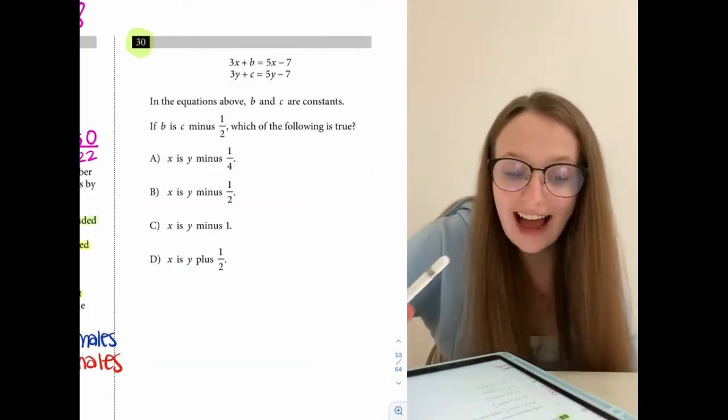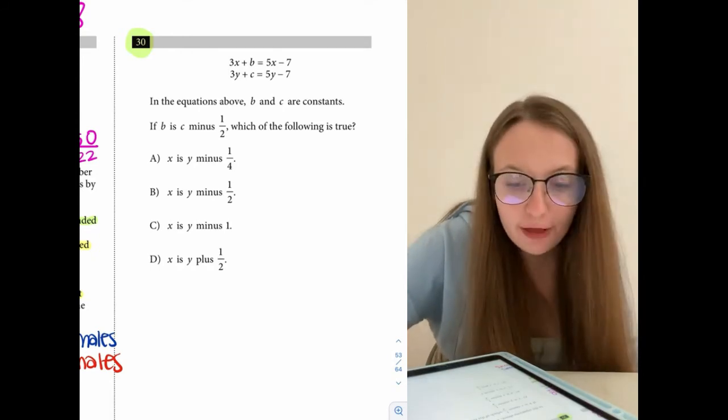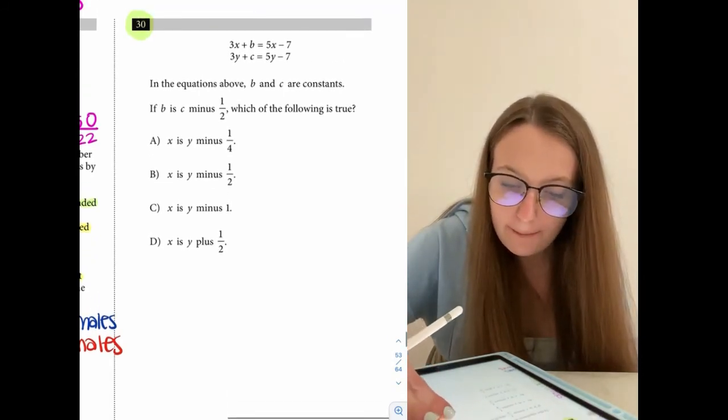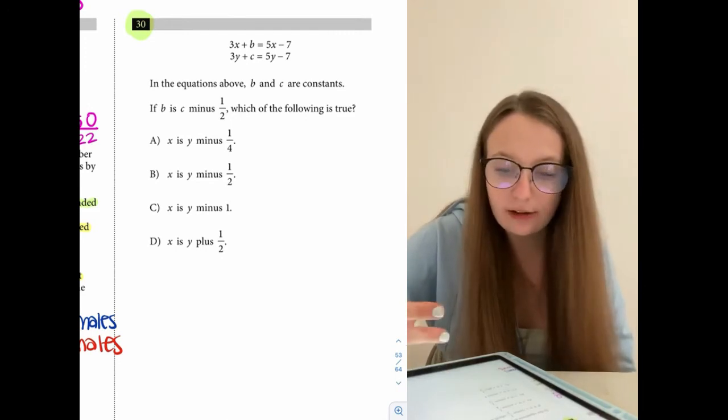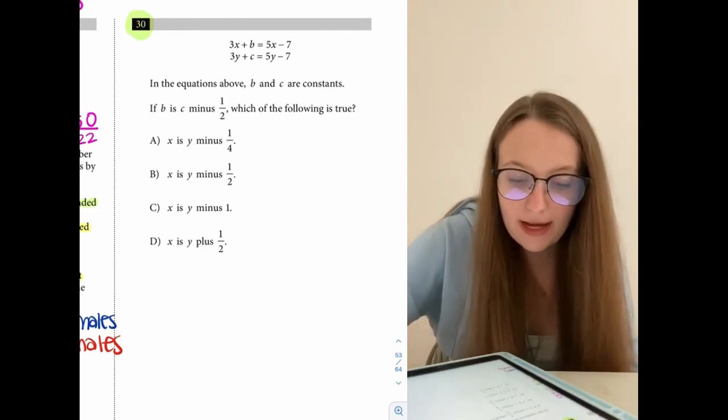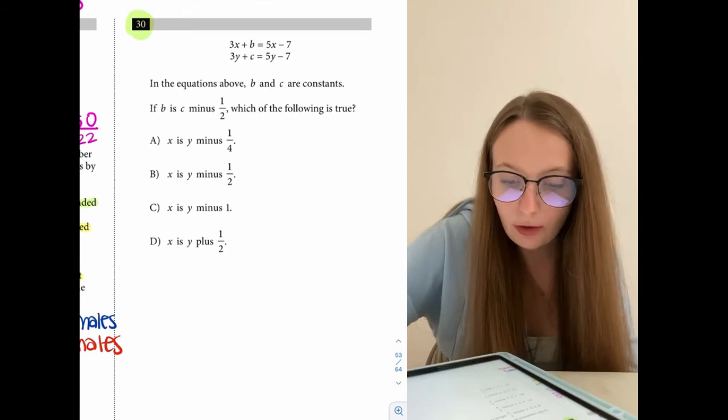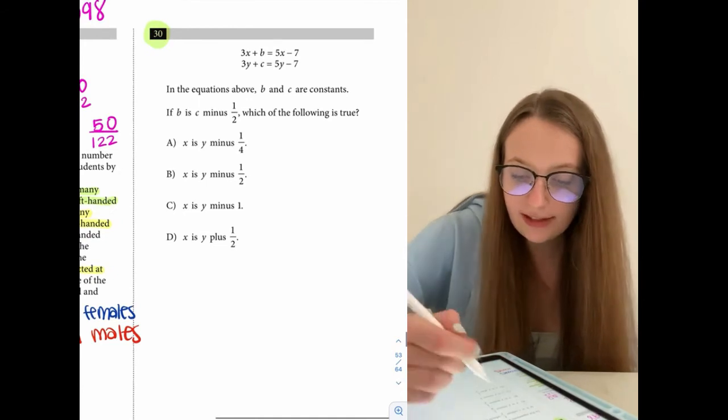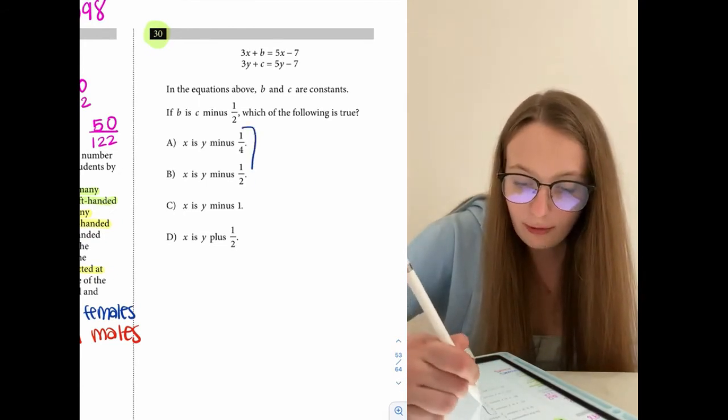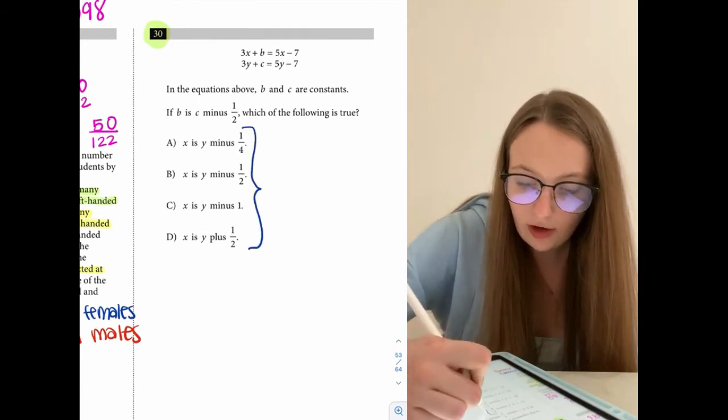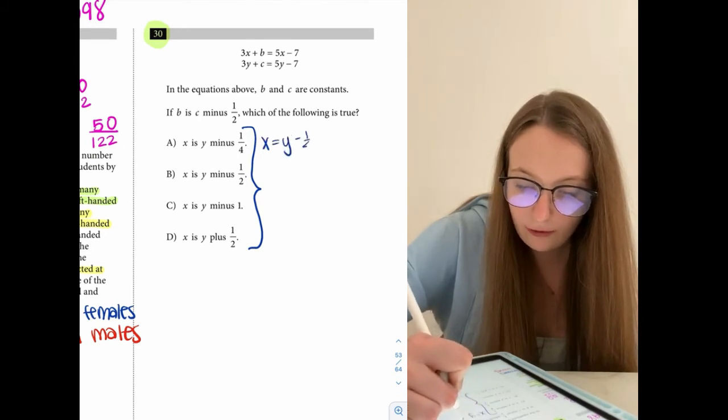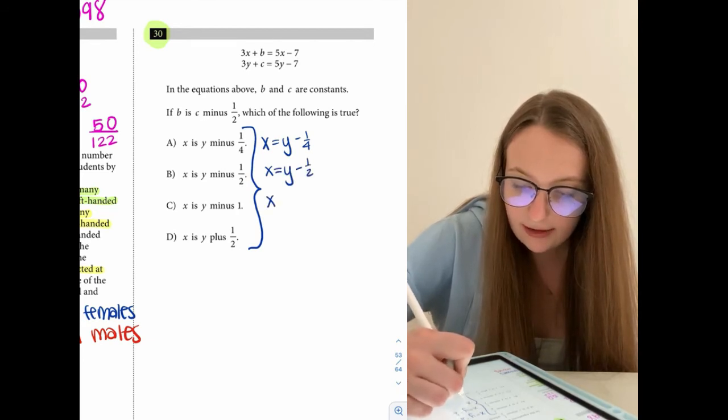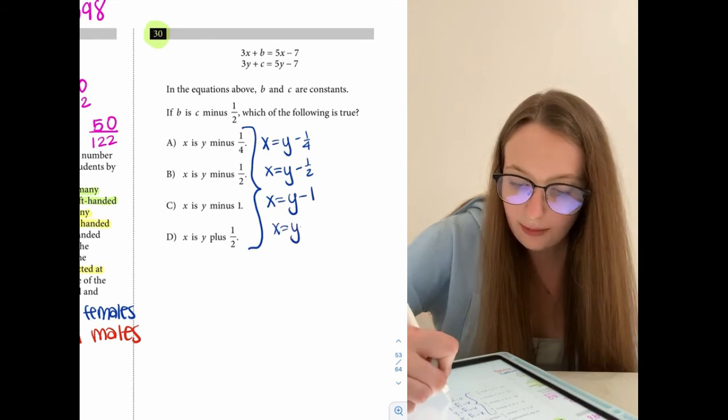Now for the last question, number 30. So we are told that B and C are constants, meaning they're just numbers. We don't know what they are. If B is equal to C minus 1 half, which of the following is true? So looking at the choices, they're expressing this in terms of words, but let's actually write what they're saying in terms of equations. So X is equal to Y minus 1 over 4. X is equal to Y minus 1 half. X is equal to Y minus 1 or X is equal to Y plus 1 half. So I know then that I have to get X in terms of Y to express my final answer.